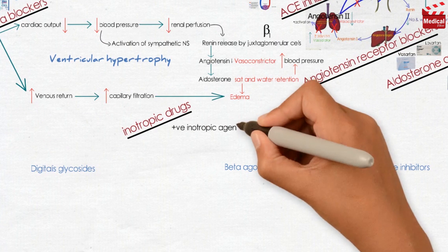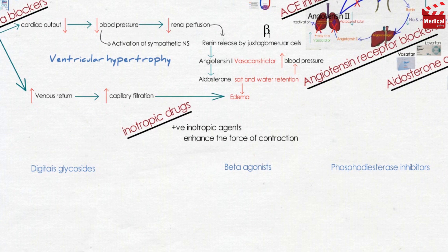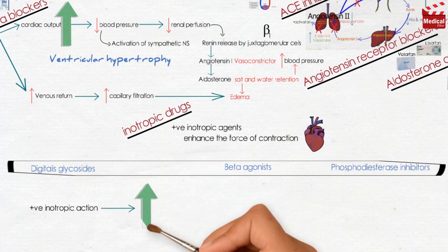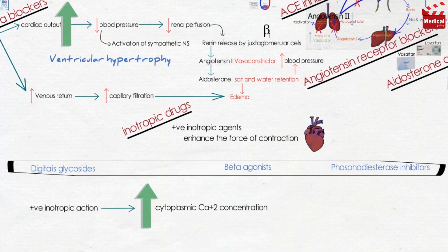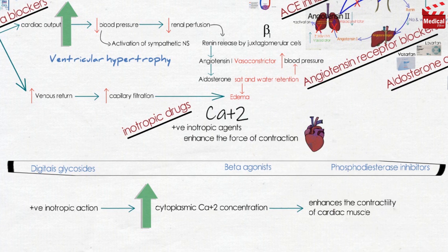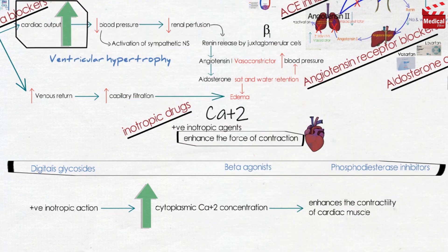Positive inotropic agents enhance the force of contraction of the heart, so they increase cardiac output. Although these drugs act by different mechanisms, the inotropic action is the result of an increased cytoplasmic calcium concentration that enhances the contractility of cardiac muscle. When calcium concentration increases, force of contraction increases and cardiac output increases, which we need to manage heart failure.